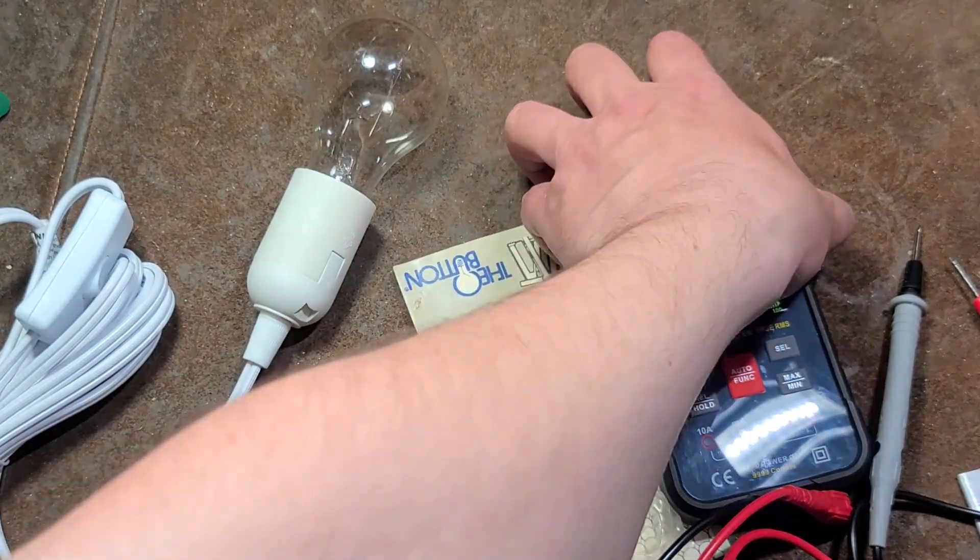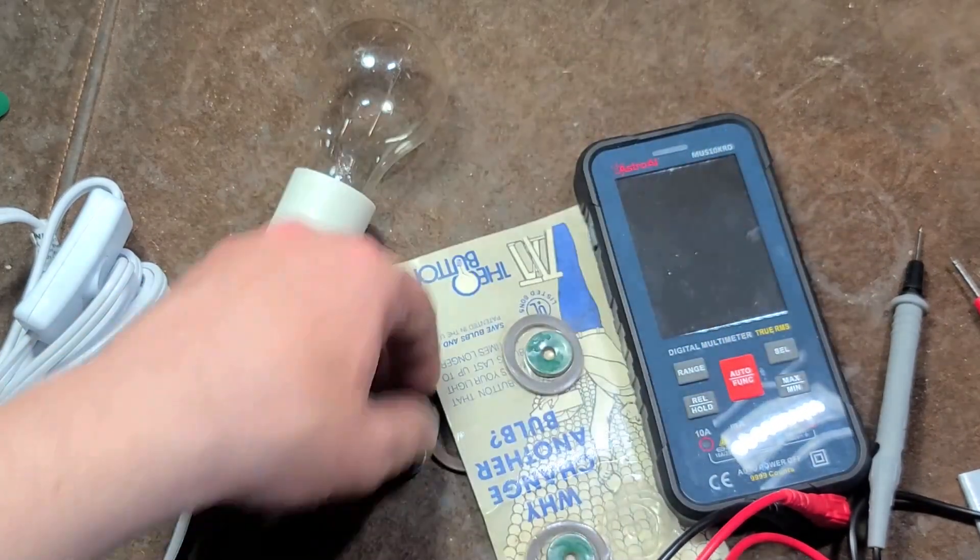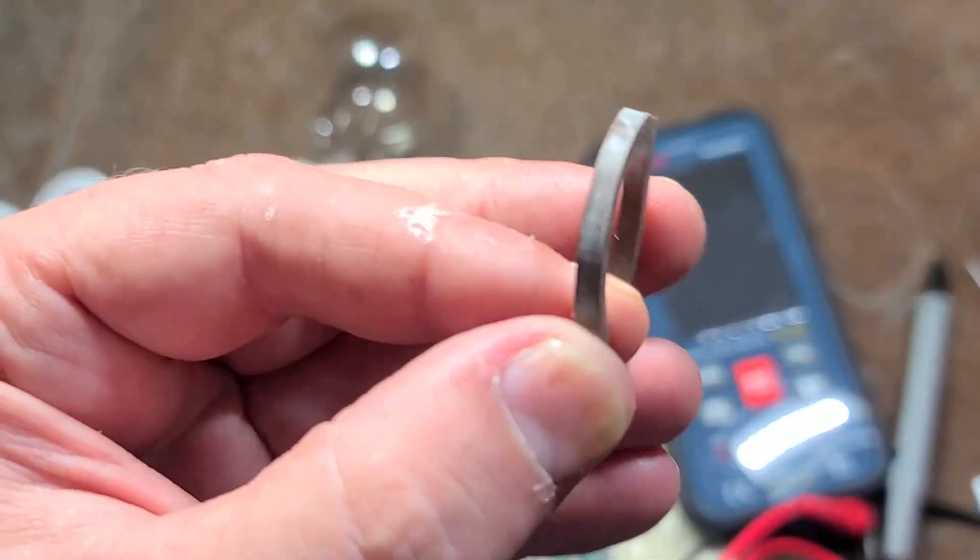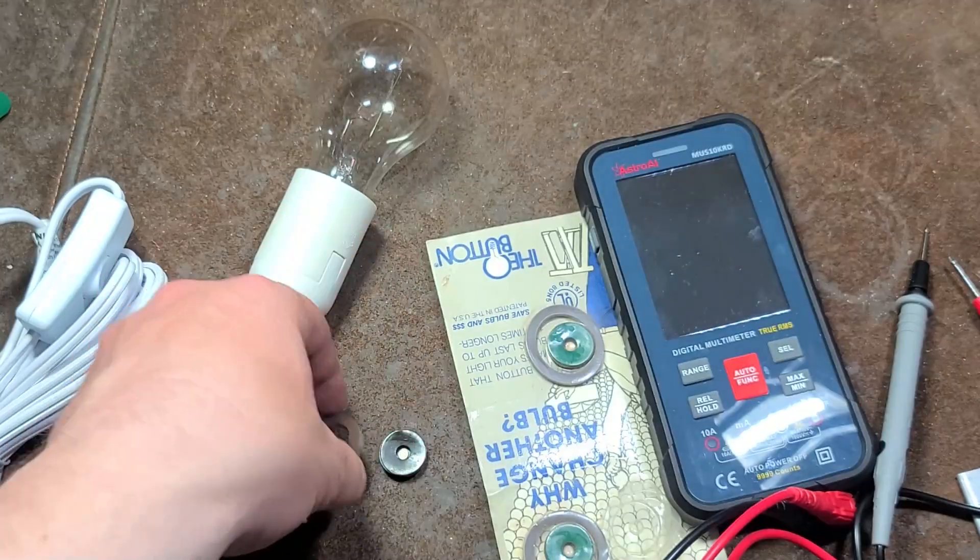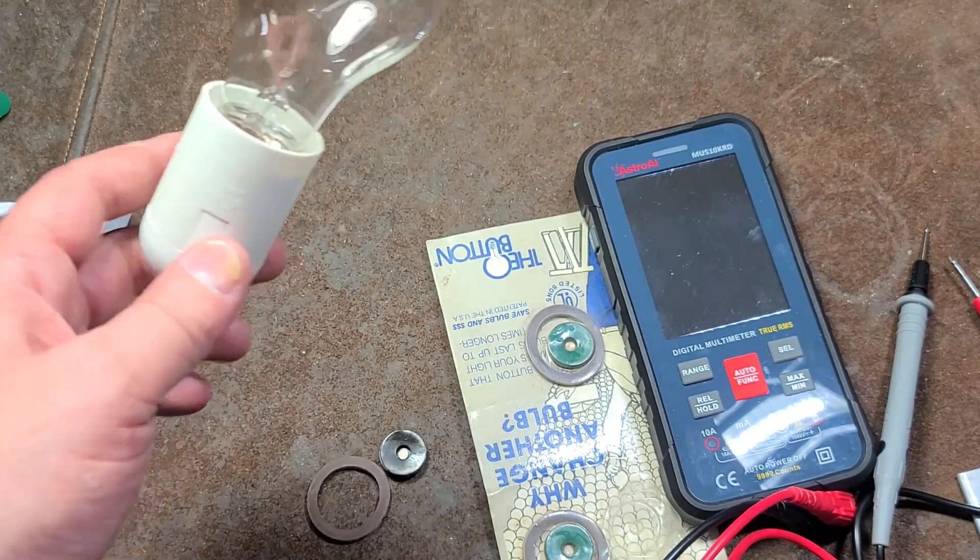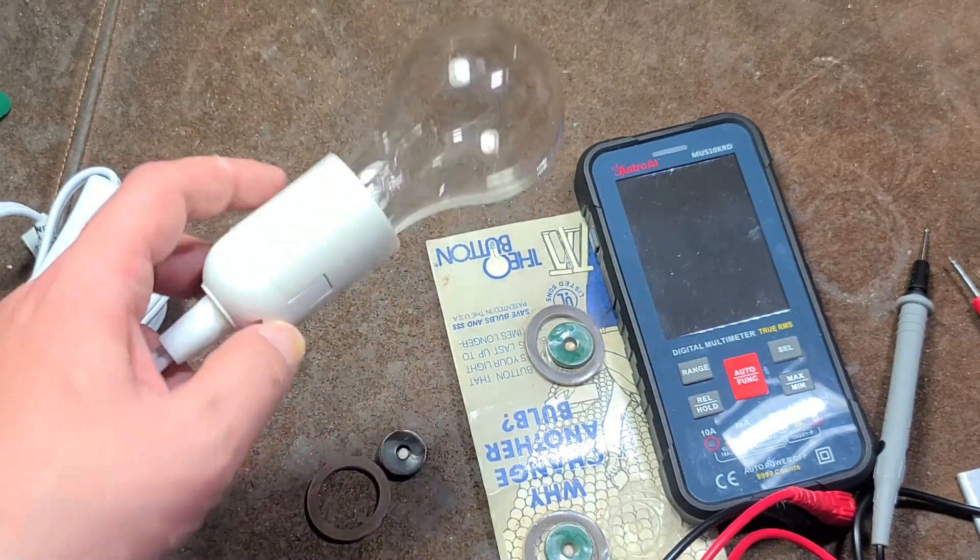And so if we actually take a look here once again, this is just a weird rubber ring. Maybe it's just to prevent moisture or something from getting in the light socket, so that these little diodes will last longer.